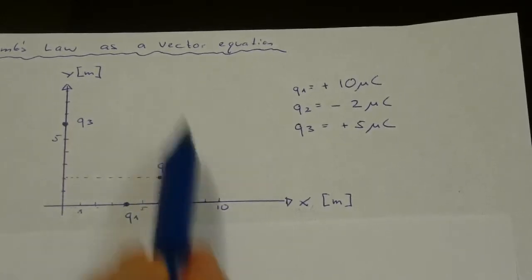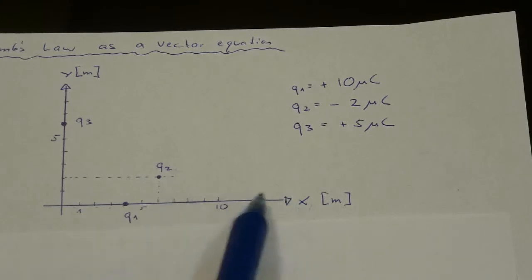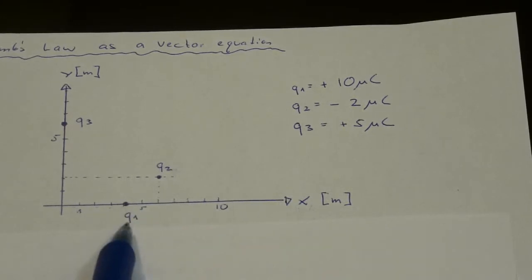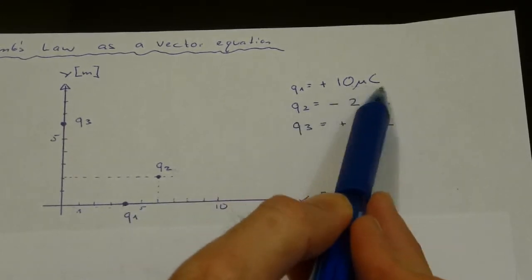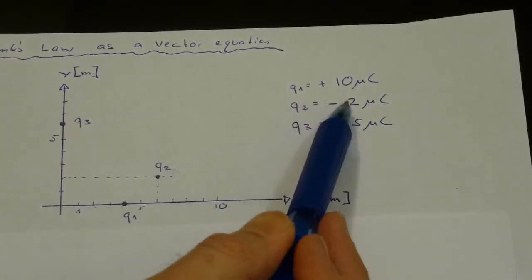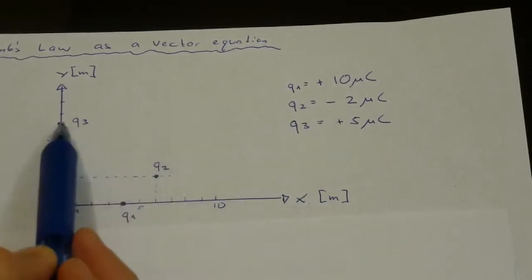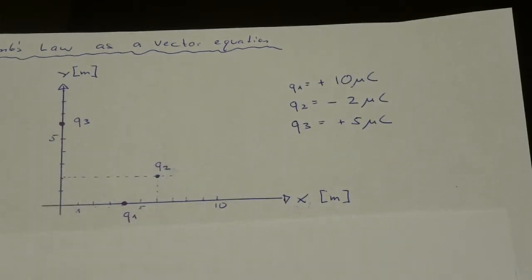Let's assume we have a coordinate system with x and y axis with magnitudes in meters. We have a charge q1 of 10 microcoulombs placed here, a charge of minus 2 microcoulombs placed here, and a charge of 5 microcoulombs placed here.